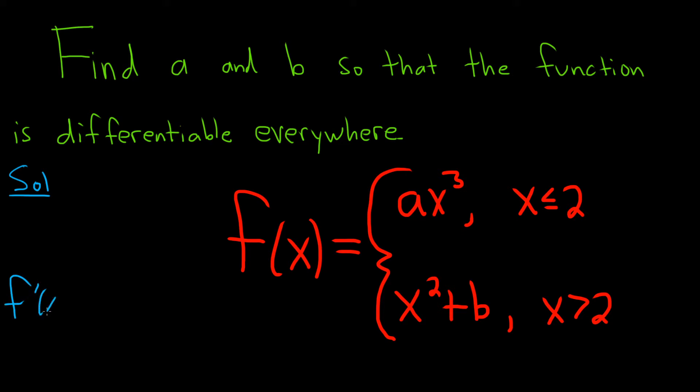So f prime of x is equal to, taking the derivative of ax cubed, that's going to be 3ax squared. This will be valid for x less than 2. We're excluding 2 here. We're not differentiating at the endpoint.